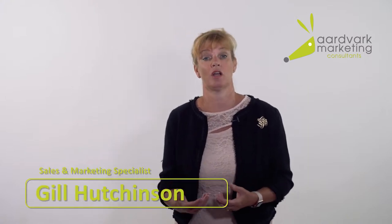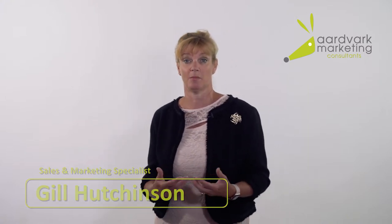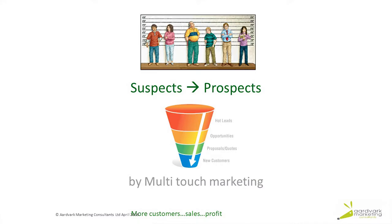I'm going to talk in the program about suspects and prospects — terms you may not have come across before. A suspect is somebody that fits the rough template for a good customer for your business. They display the characteristics of a potential customer — someone you can't pinpoint exactly, but they're on the radar as being in the right sort of territory for you.